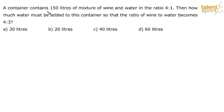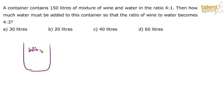A container contains 150 liters of mixture of wine and water in the ratio of 4 is to 1. There is a mixture of wine and water — 4 is to 1 is the ratio, which means for every 4 parts of wine there is 1 part of water. The total quantity in this container is 150 liters.